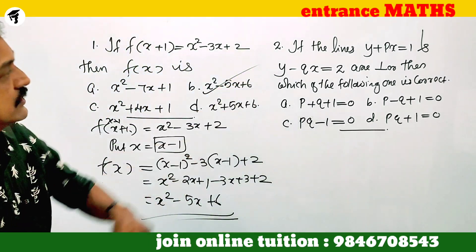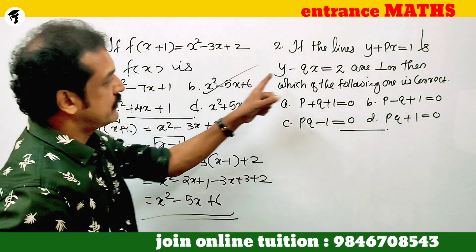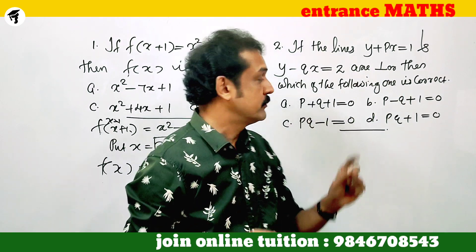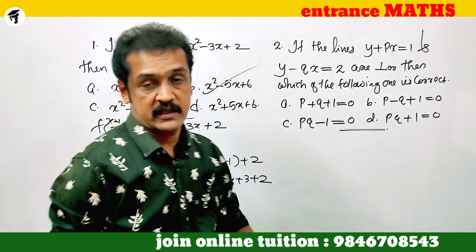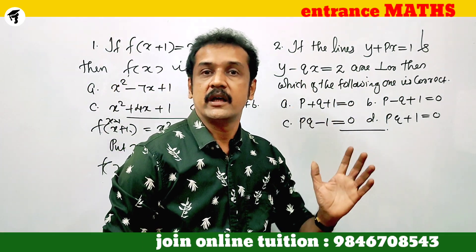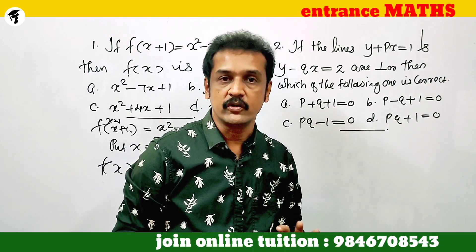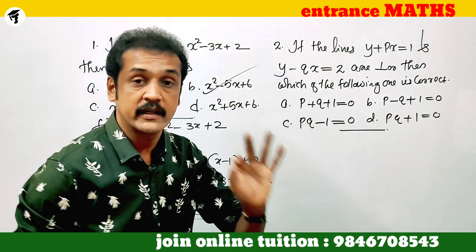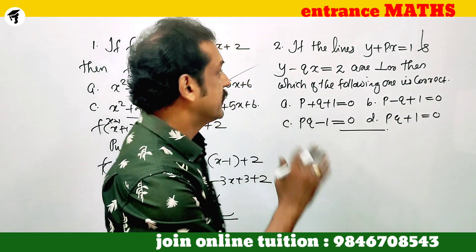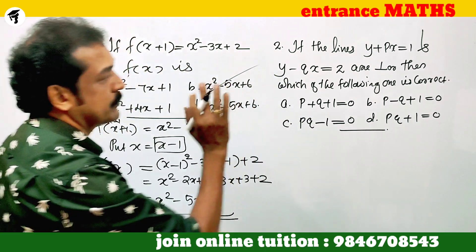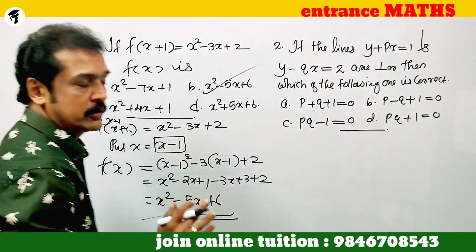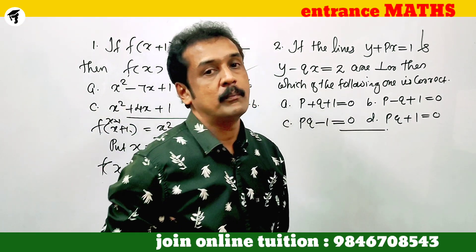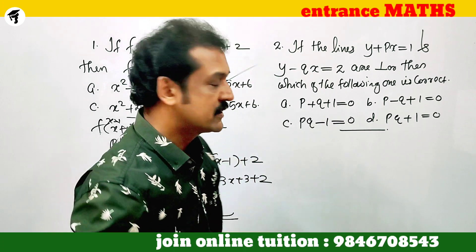Next problem: if the lines y plus px equal to 1 and y minus px equal to 2 are perpendicular, then which of the following is correct? Since these two lines are perpendicular, we apply the perpendicularity condition.